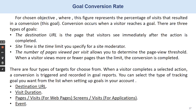For the chosen objective, this figure represents the percentage of visits that resulted in a conversion. A conversion occurs when a visitor reaches a goal. There are three types of goal: the destination URL — the page that visitors see immediately after the action is completed; site time — the time limit specified for a site moderator; and the number of pages viewed per visit, which allows you to determine the page view threshold. When a visitor views more or fewer pages than the limit, the conversion is complete. There are also four types of targets, and when a visitor completes a selected action, a conversion is triggered and recorded in goal reports.